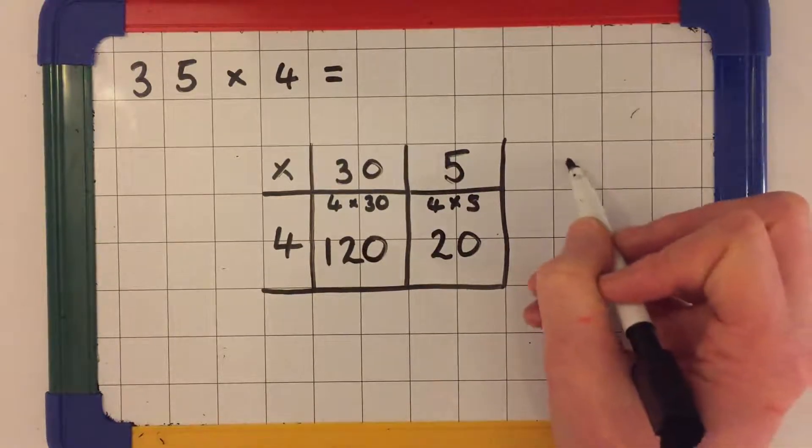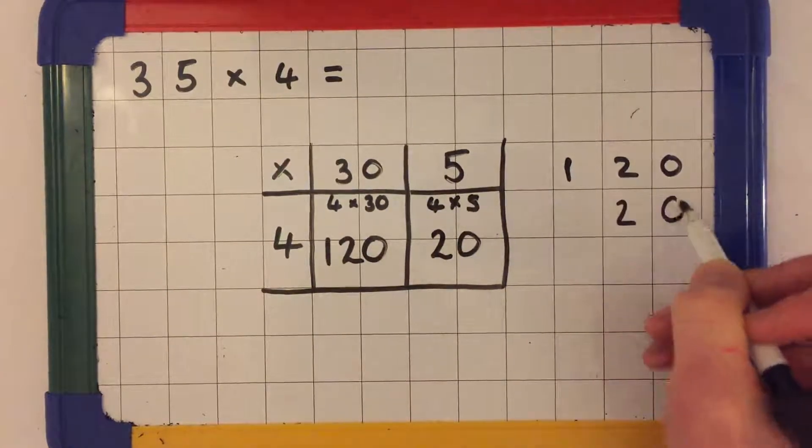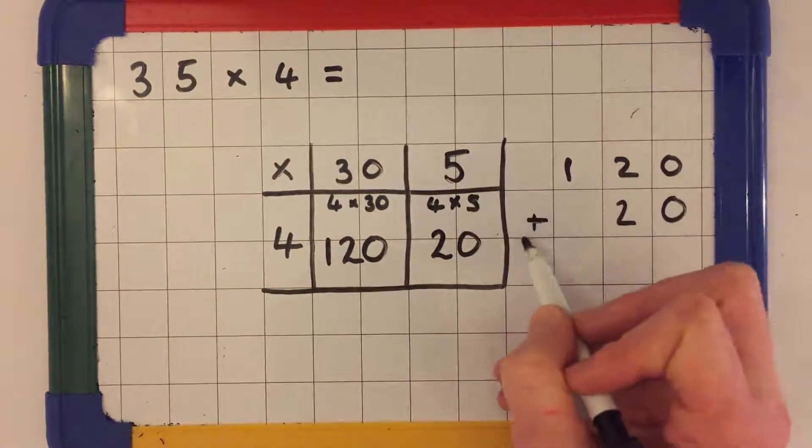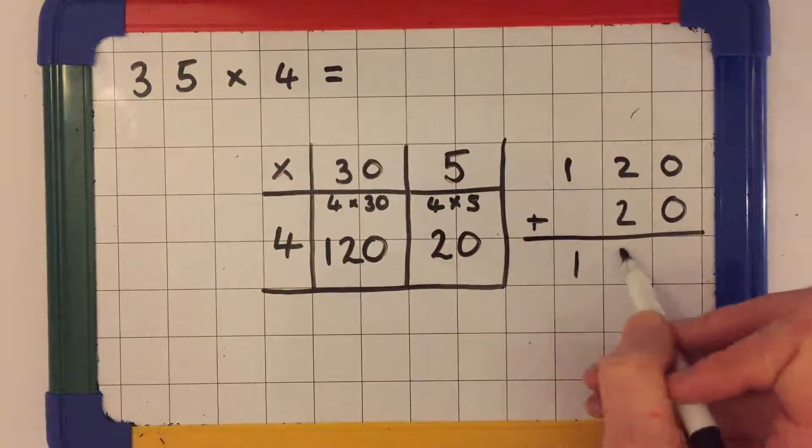Now we need to use column addition to add up the two answers in our grid. So we add up 120, add 20, 140.